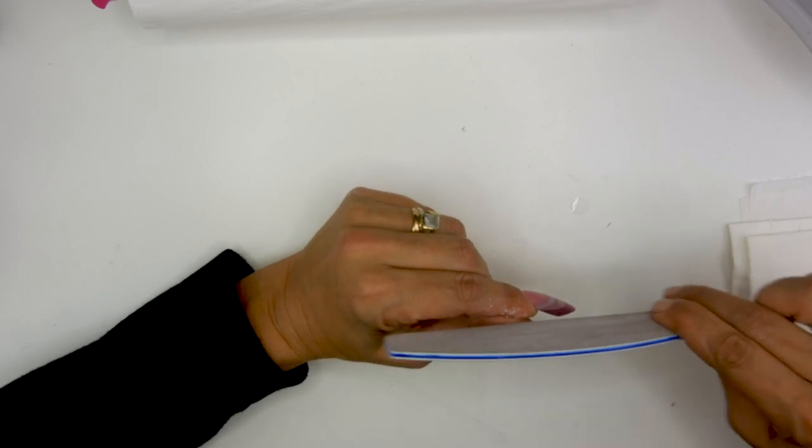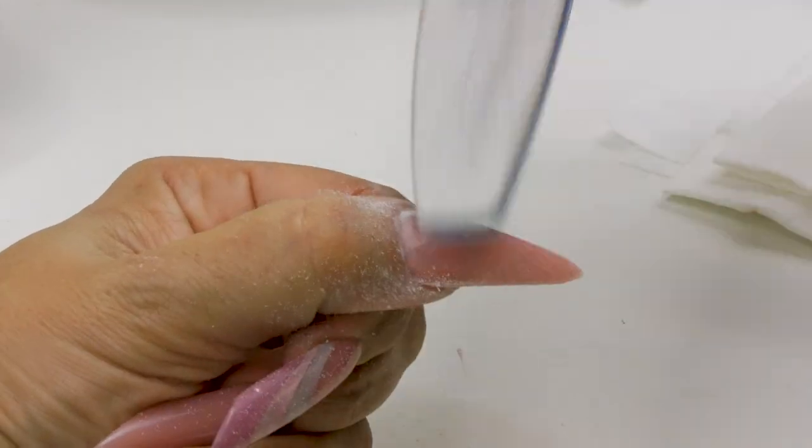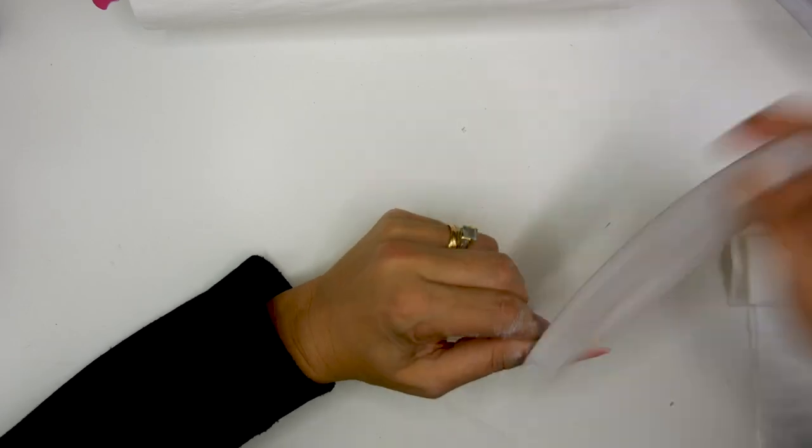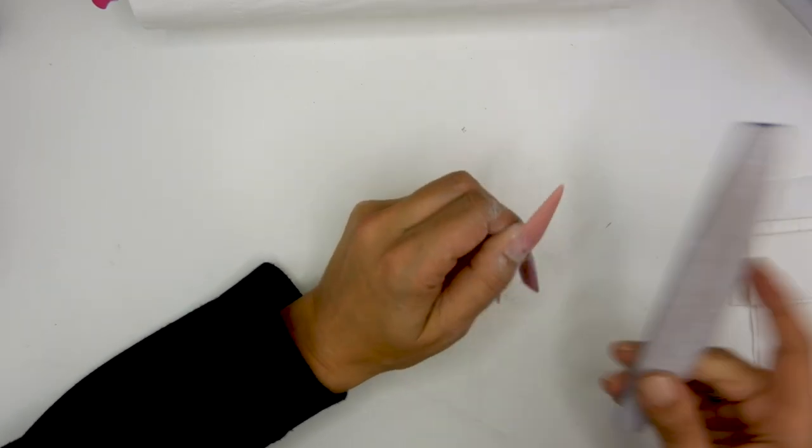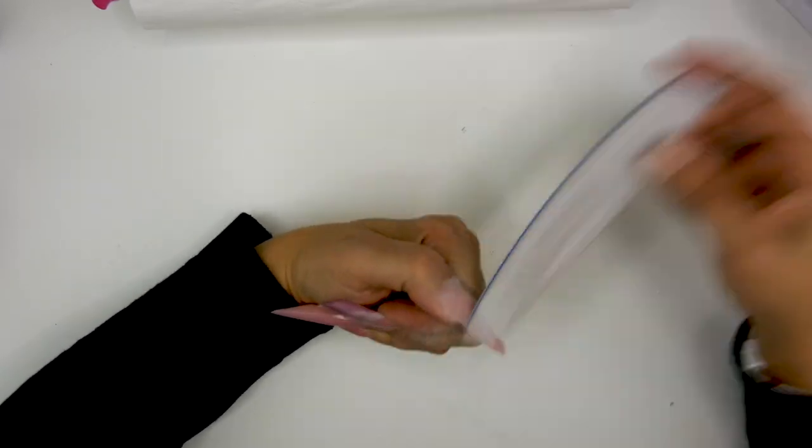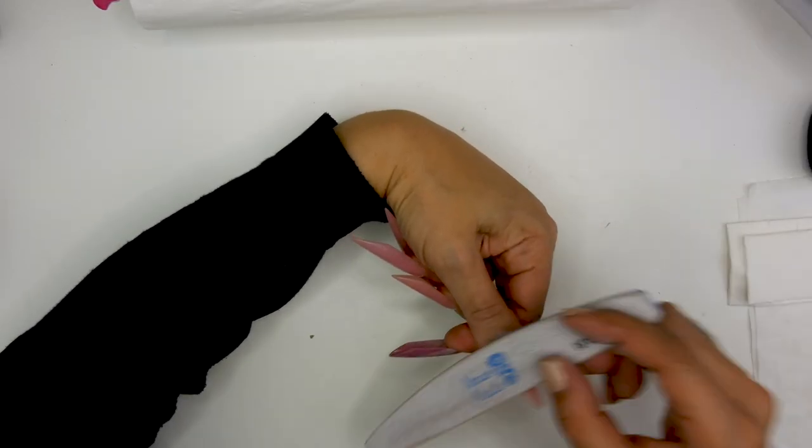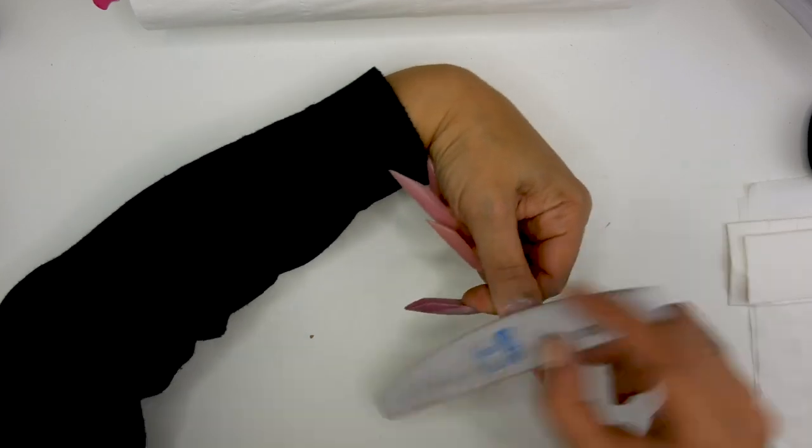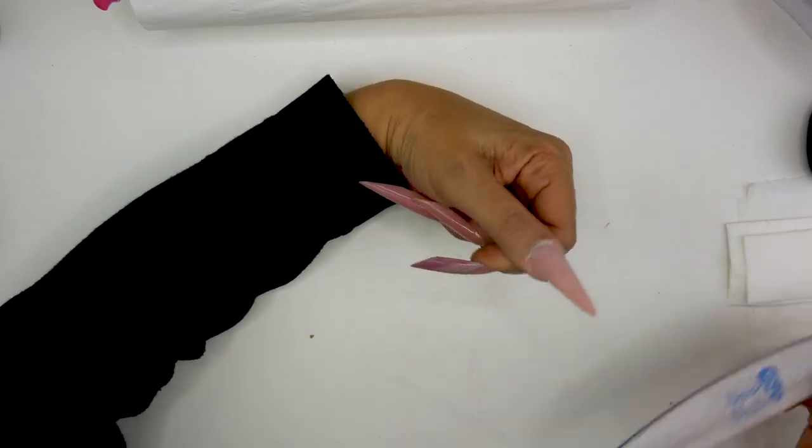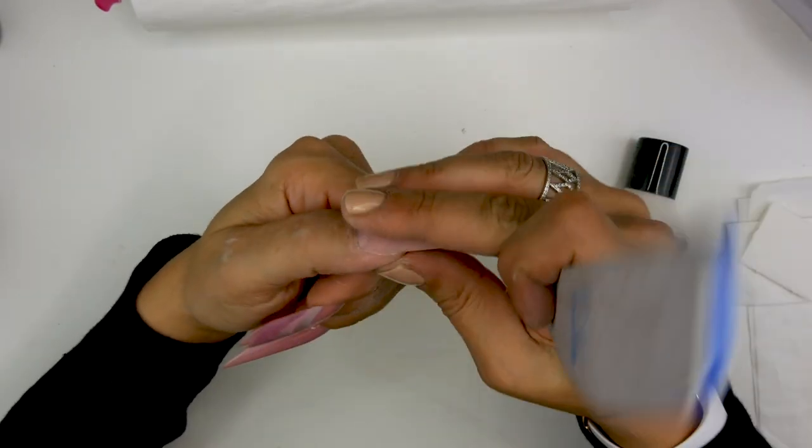I'm going to do the filing routine. So sidewall first, then the cuticle area. I'm using a 180 grit to do the filing routine and I'm going to work on the side of the nail and join the two sides to check the shape of my stiletto.